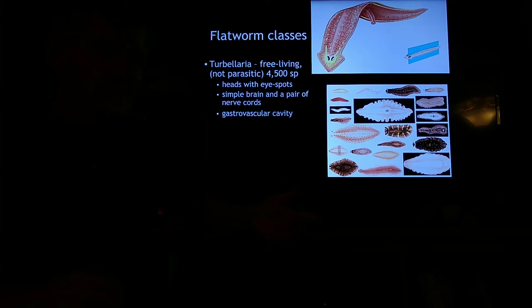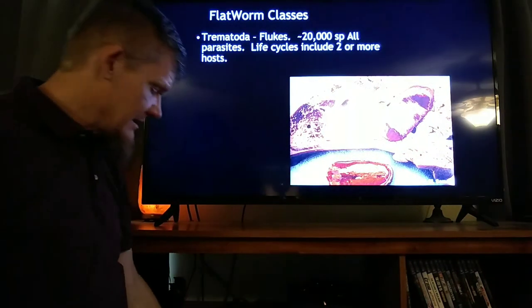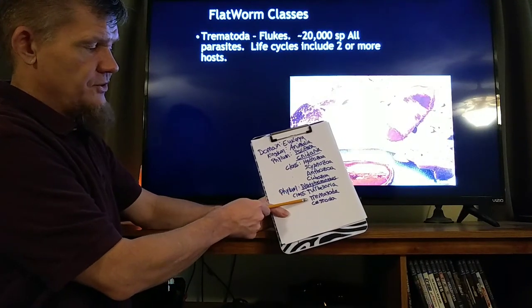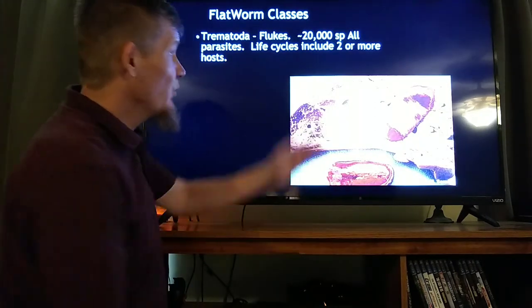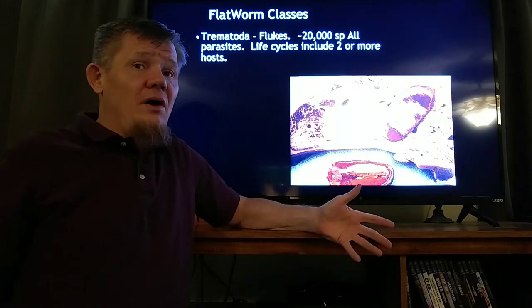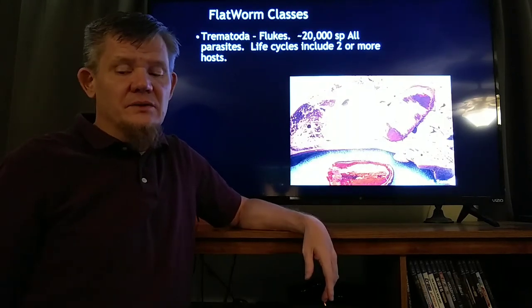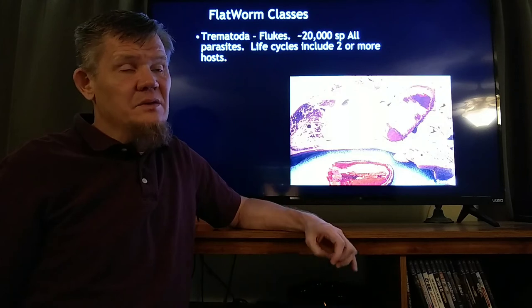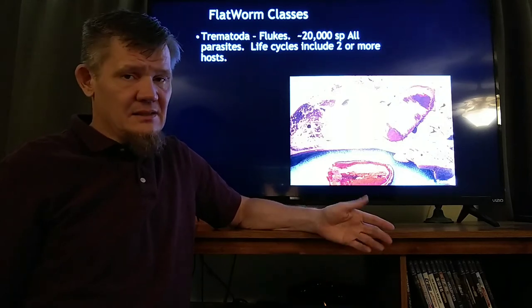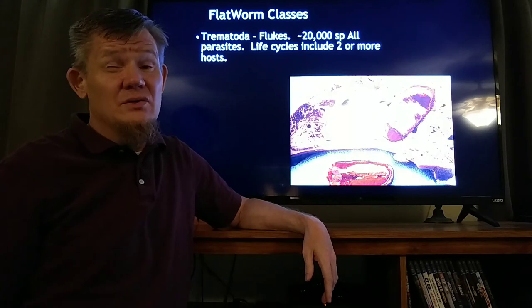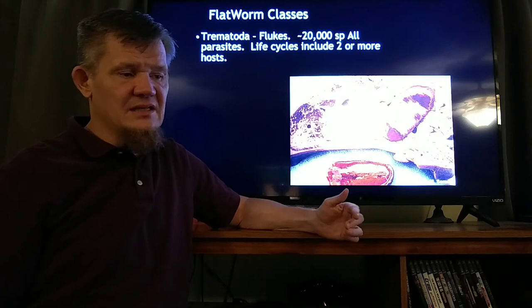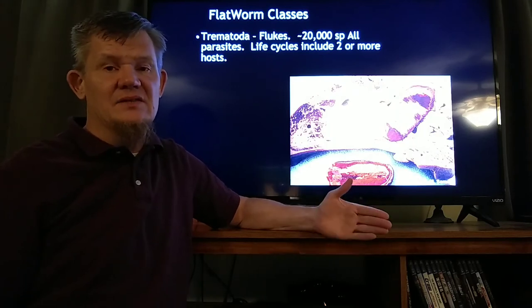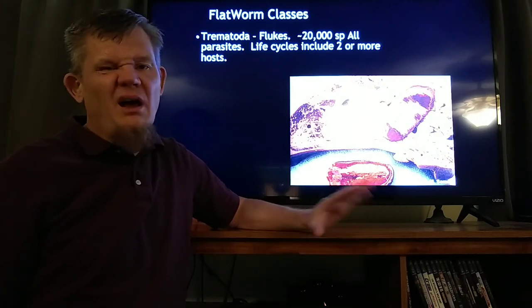Turbellarians — about 4,500 species. Our next class of flatworms is class Trematoda. These are the flukes — about 20,000 species of flukes, so two-thirds of all flatworms are flukes. They have very complicated life cycles and they're all parasites, usually involving two or more hosts. For example, one life stage has to be in a snail, the next life stage has to be in a fish, and the last life stage has to be in a mammal — really complicated life cycles.